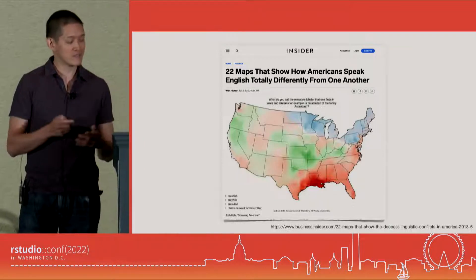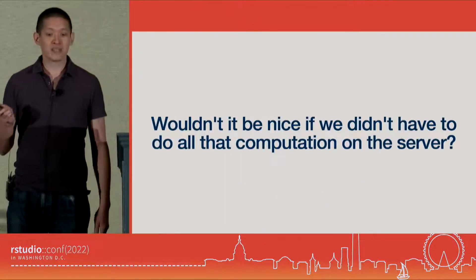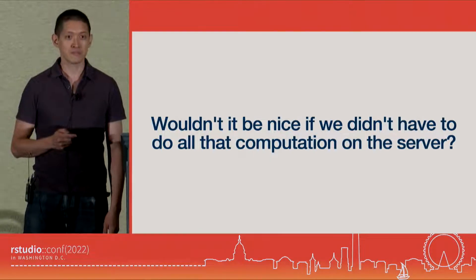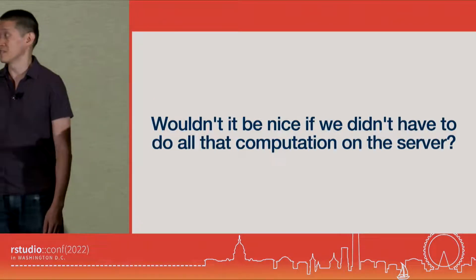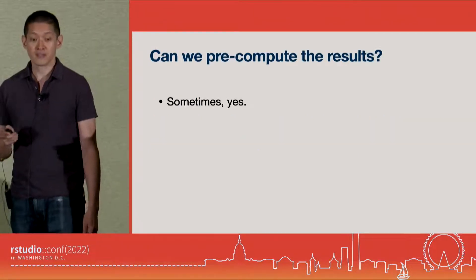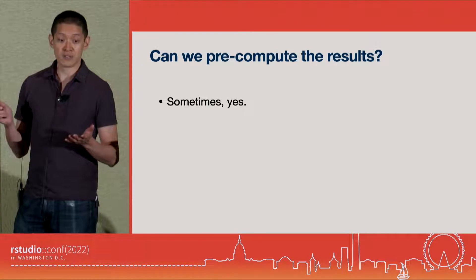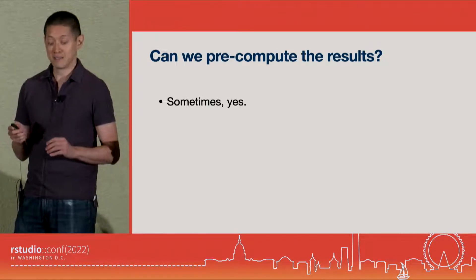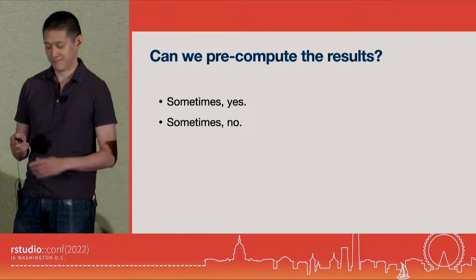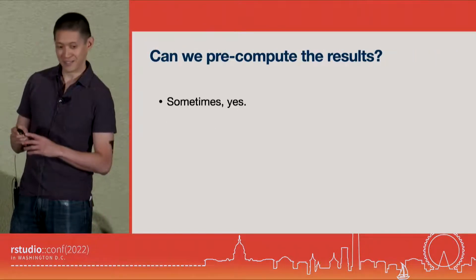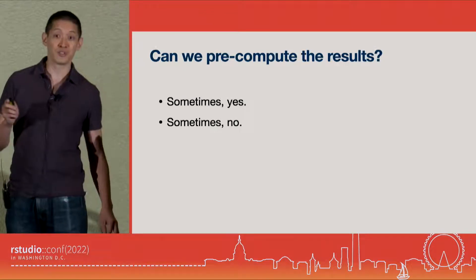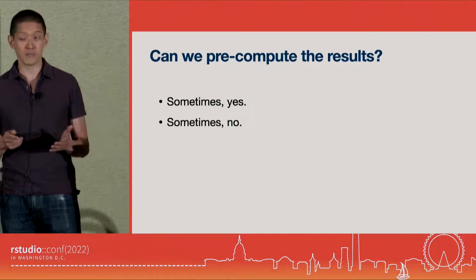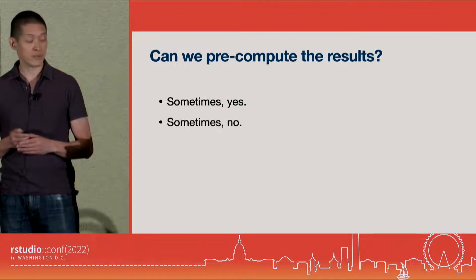This raises an interesting question: wouldn't it be nice if we didn't have to do all that computation on the server? One thing you can do is pre-compute the results — sometimes you can do this, and sometimes you can't. Some of those maps could have been pre-generated, and actually Josh changed his app to do that, but that final one with the personalized map could not be pre-computed.